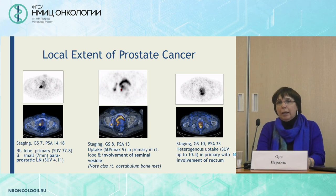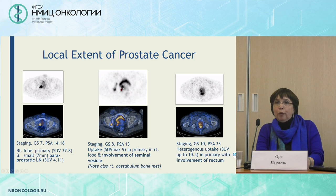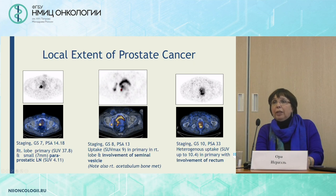MRI is the primary modality that should be used, but here we see uptake in the right lobe and also a very small — approximately 7 mm — paraprostatic lymph node. This is another patient with uptake in the primary tumor in the right lobe of the prostate, and we see that the tumor is involving the seminal vesicles. And this is another patient where the primary tumor is clearly seen involving the rectum.